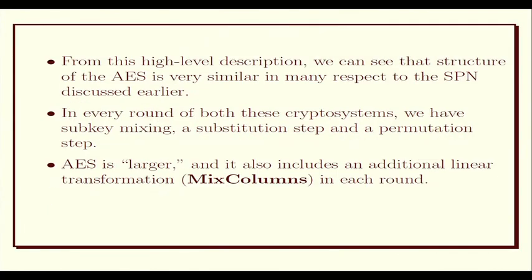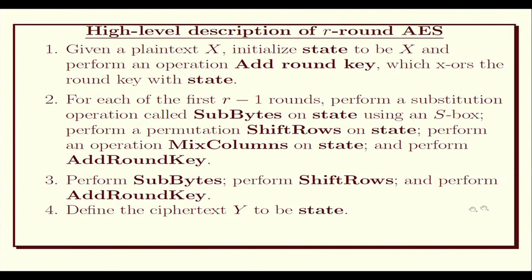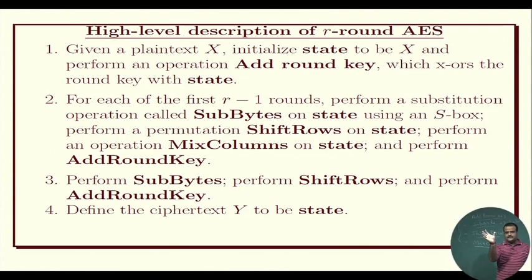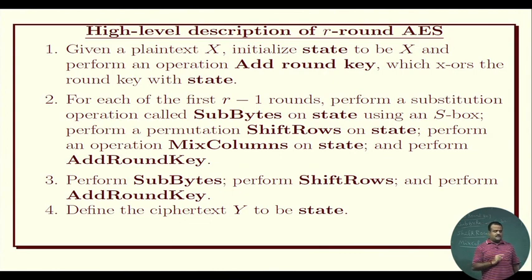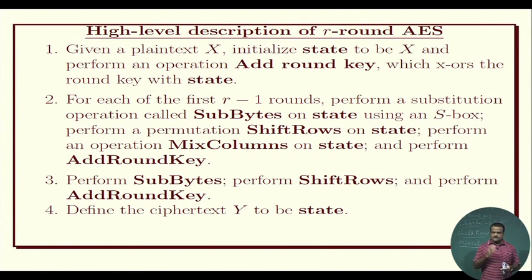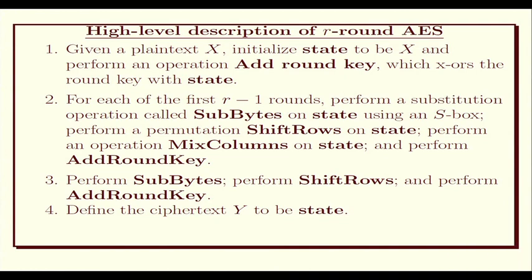Here is the high-level description of a typical r-round AES. We take the plaintext and store it in a 4×4 matrix where each entry is a byte, then perform the Add Round Key operation first. After that, we perform Sub Byte, Shift Row, Mix Column, and Add Round Key operations — this continues for r minus one rounds.